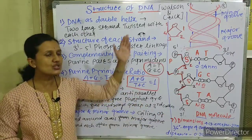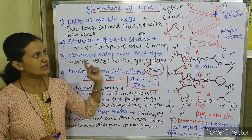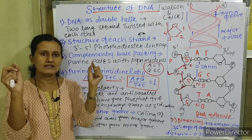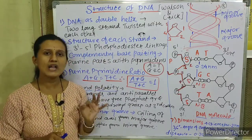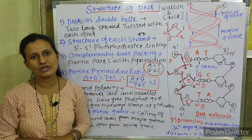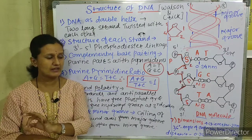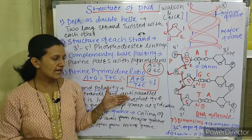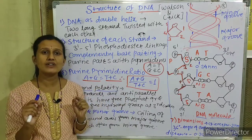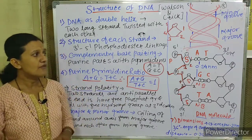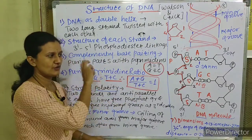Seventh point — the dimensions of the DNA molecule. The total diameter of the DNA double helix — the distance between the two strands — is 2 nanometers, which equals 20 angstrom units (since 1 nanometer = 10 angstrom units). The distance between one nucleotide step and the next — that is, from one phosphate-sugar-nitrogen base unit to the next — is measured by the angle of deflection.